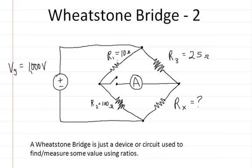So here R1 is 10 ohms, R2 is 100 ohms, Rx is unknown, R3 is 25 ohms, and there I drew the amp meter with the switch in it. And here's our power supply.